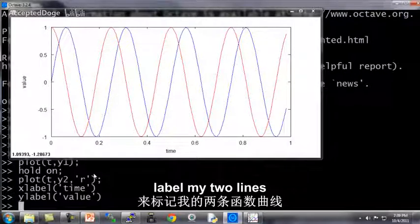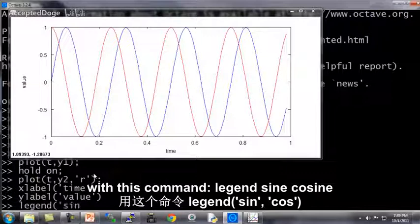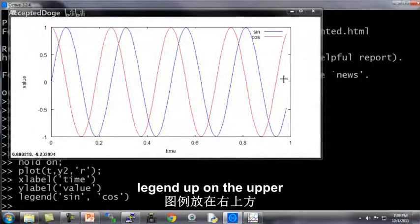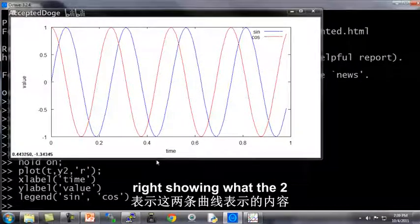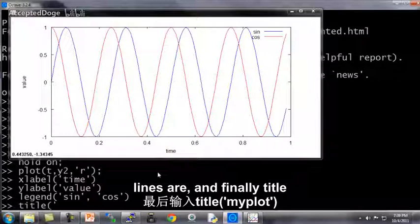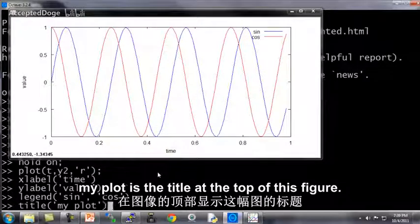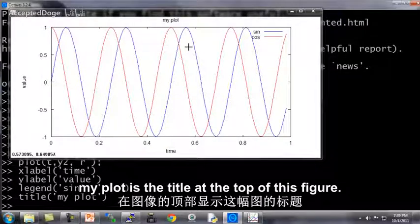And I can also label my two lines with this command, legend, sine, cosine. And this puts this legend up on the upper right, showing what the two lines are. And finally, title, my plot, puts a title at the top of this figure.